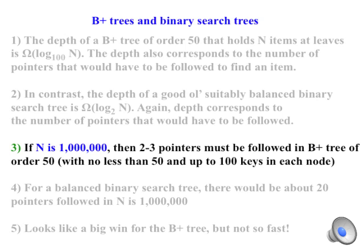If n is 1 million, we've seen that at least 2 pointers must be followed in a B-plus tree of order 50, and probably at most 3 pointers in such a case. You can verify this if you want to.